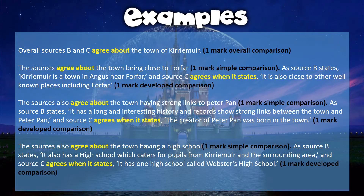Here is an example answer. Step 1 — overall comparison: 'Overall, sources B and C agree about the town of Kirriemuir.' That gets you a mark. The sources agree about the town being close to Forfar — one mark for the simple comparison. As source B states: 'Kirriemuir is a town in Angus near Forfar,' and source C agrees when it states: 'It is also close to other well-known places including Forfar.' Those are matching quotes from each source.